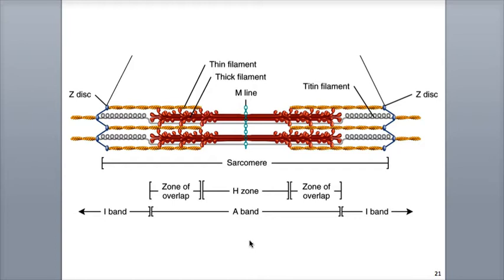Our first region is the A-band, located within the middle of the sarcomere. It is a darker region which runs the entire length of the thick filaments. There is a zone of overlap at either end of the A-band, where the thick and thin filaments overlap each other side by side.